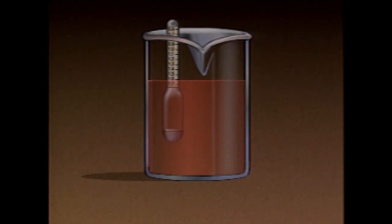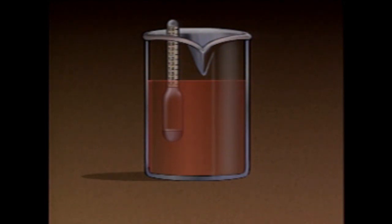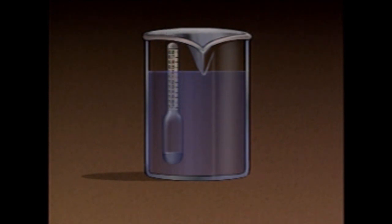The hydrometer's scale indicates a specific gravity value of about 1.6. If the acid is replaced with a less dense solution, the hydrometer displaces more of the solution and sinks lower. As a result, the hydrometer's scale indicates a lower specific gravity value.